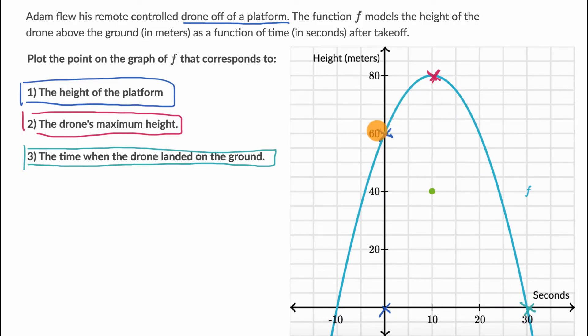I know what some of you are thinking: wait, there's another time where the drone's height is at zero. That's right over here at negative 10 seconds. Couldn't we say that's also a time when the drone landed on the ground?